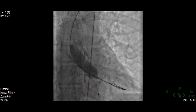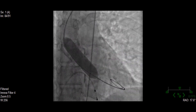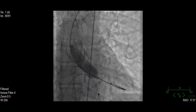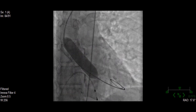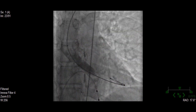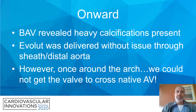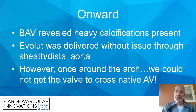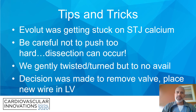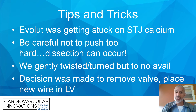Note during the BAV how calcified that ascending aorta is — there were significant calcifications all through the ascending aorta. The BAV revealed heavy calcifications were present. The Evolute was delivered without issue through the sheath and distal aorta. However, once we got around the arch we could not get the valve to cross the native aortic valve. The Evolute was getting stuck on the STJ calcium. We were careful not to push too hard because a dissection can occur quite easily, so we gently twisted and turned but to no avail.